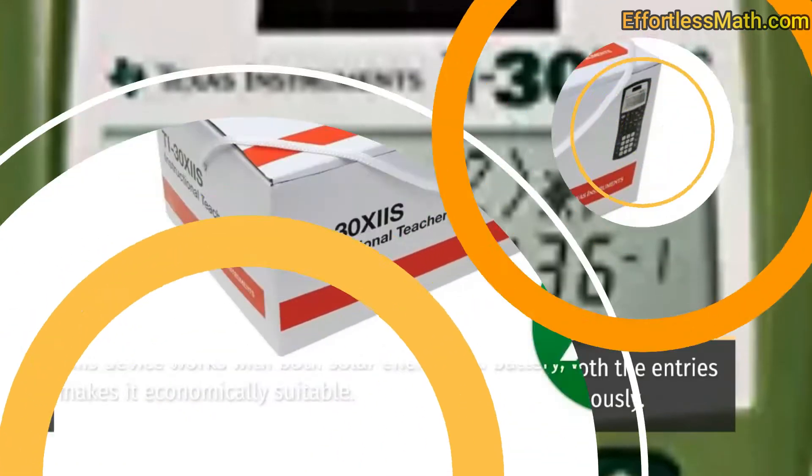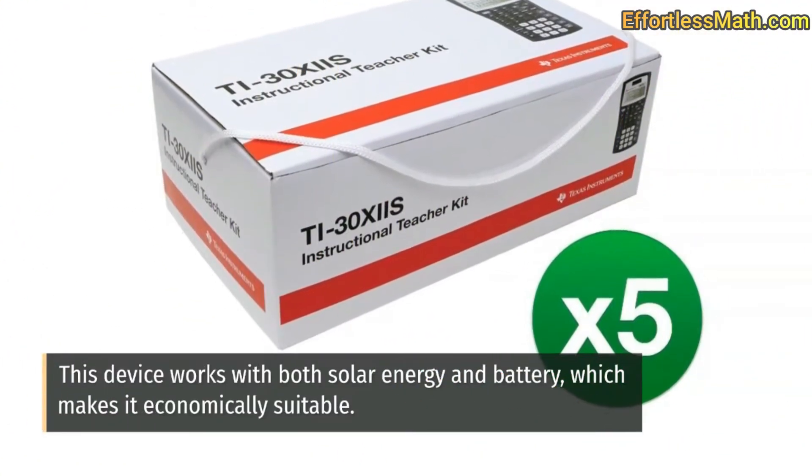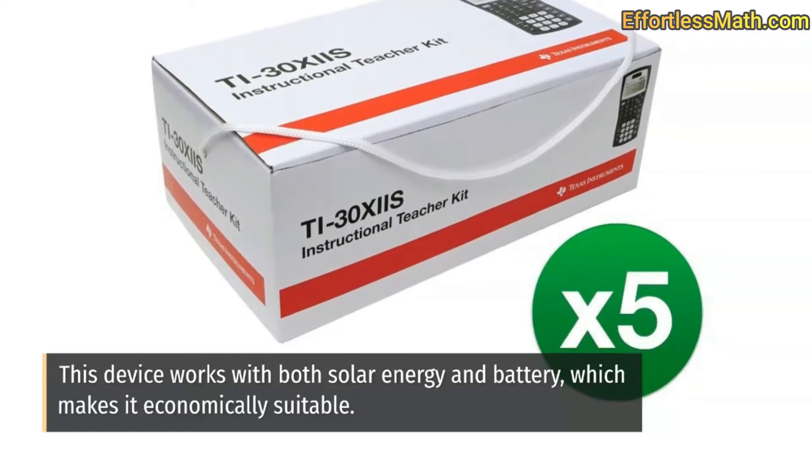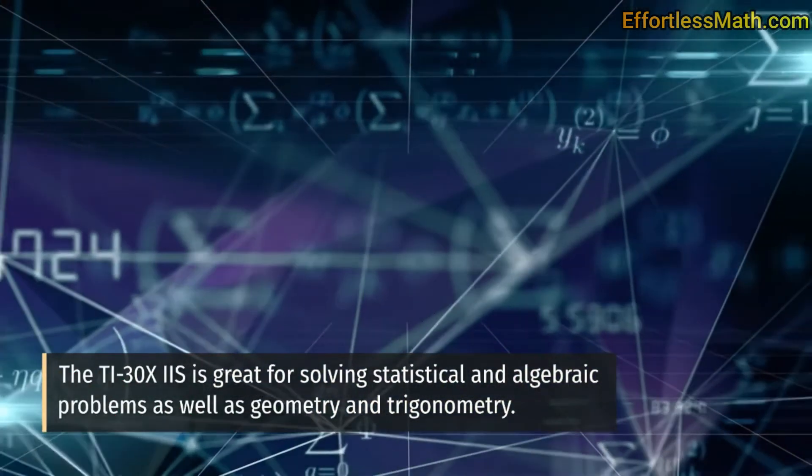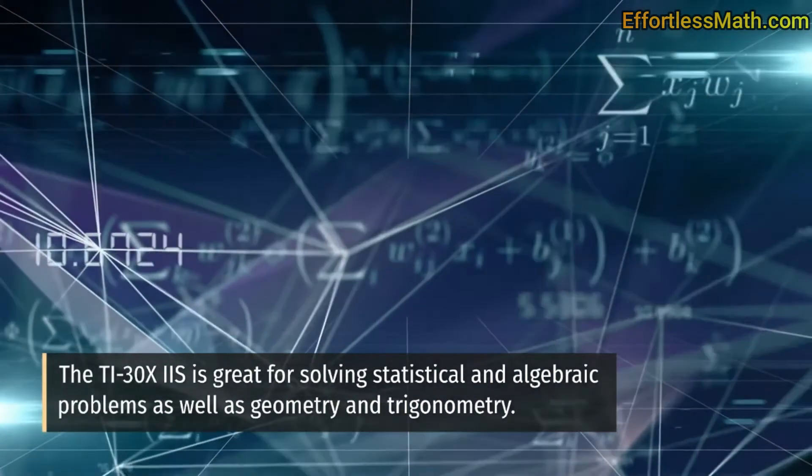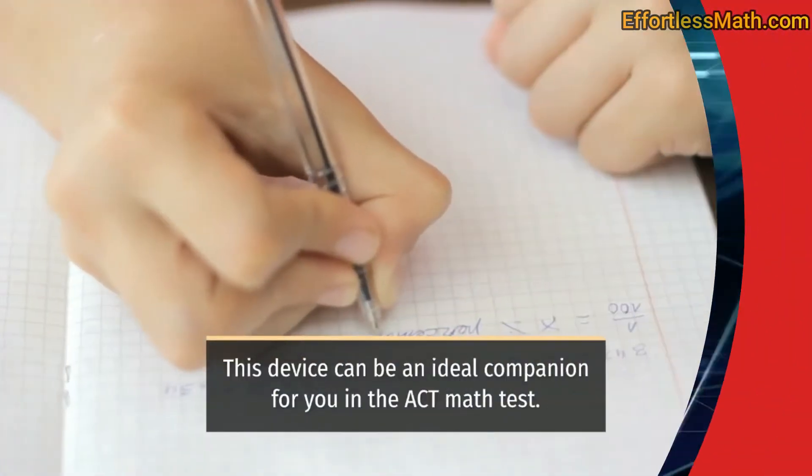This calculator has a 2-line display that can show both the entries and the results of the calculation simultaneously. This device works with both solar energy and battery, which makes it economically suitable. The TI-30X IIS is great for solving statistical and algebraic problems as well as geometry and trigonometry. This device can be an ideal companion for you in the ACT math test.